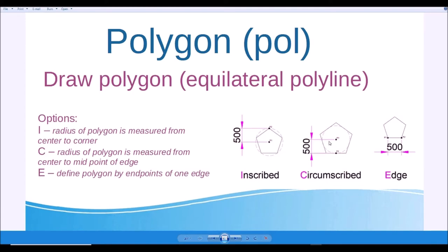From center to midpoint of edge — depending on which information you have, you will select the appropriate option to create the polygon. And finally, E, the edge option, defines the polygon by specifying two points of one edge. If you specify two points with a distance of 500, it will create the polygon. Let's go into AutoCAD.